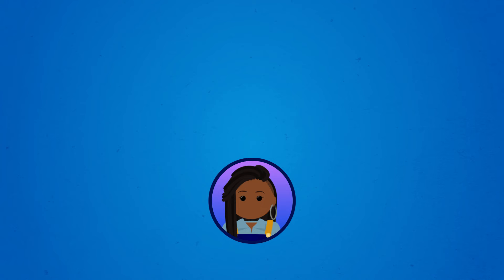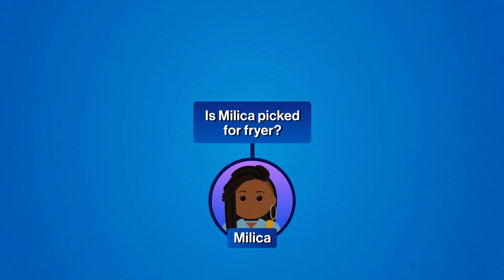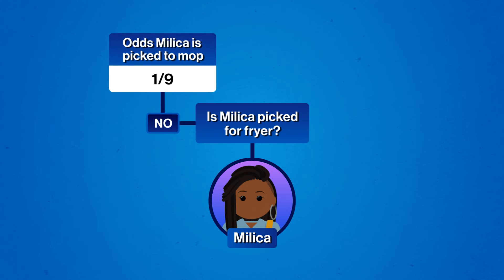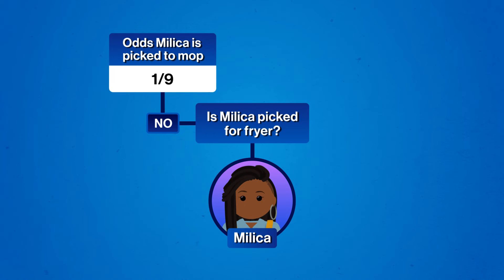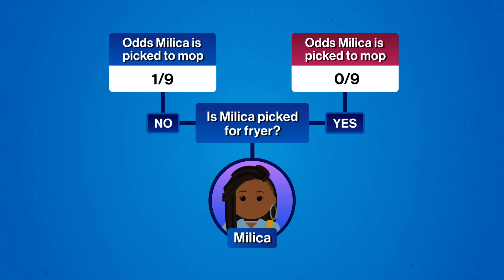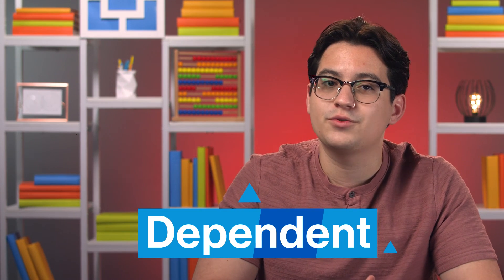But now something crucial has changed. Let's consider Hendrik's fellow staff member Melissa, and the probability she gets assigned floors on a Friday. If someone else, say Hendrik, gets picked to do the fryer, then Melissa is now only one of nine names going into the hat, so her chances of being picked to do the floors are 1 in 9, or about 11%. But if she herself had been picked to do the fryer, her chances of being picked for the floors would instead be 0%, since her name no longer gets replaced in the hat. By not replacing the names, they've introduced a dependence between the two events.